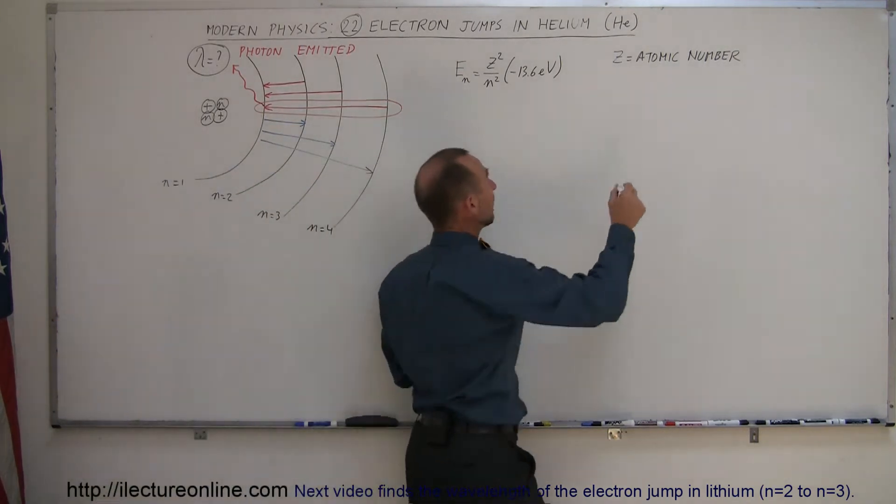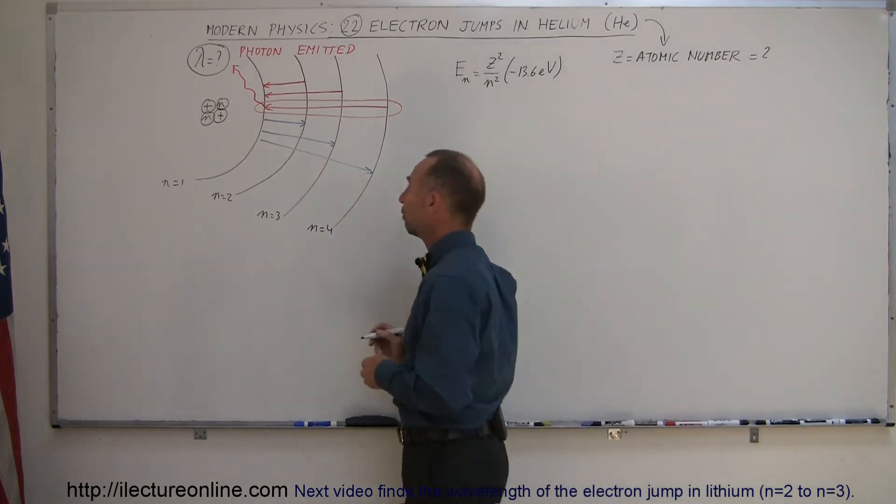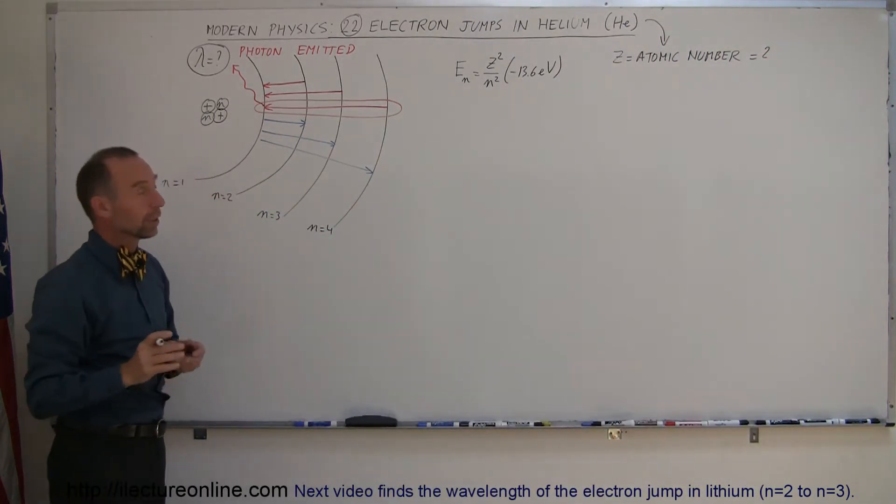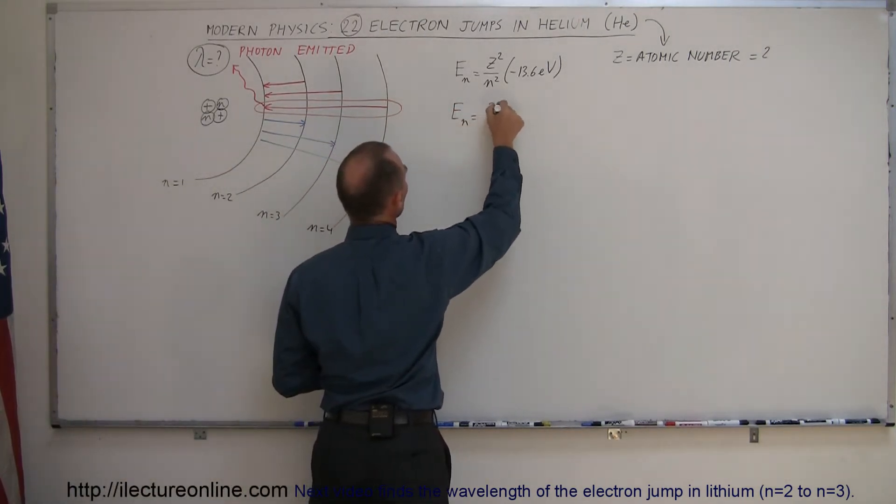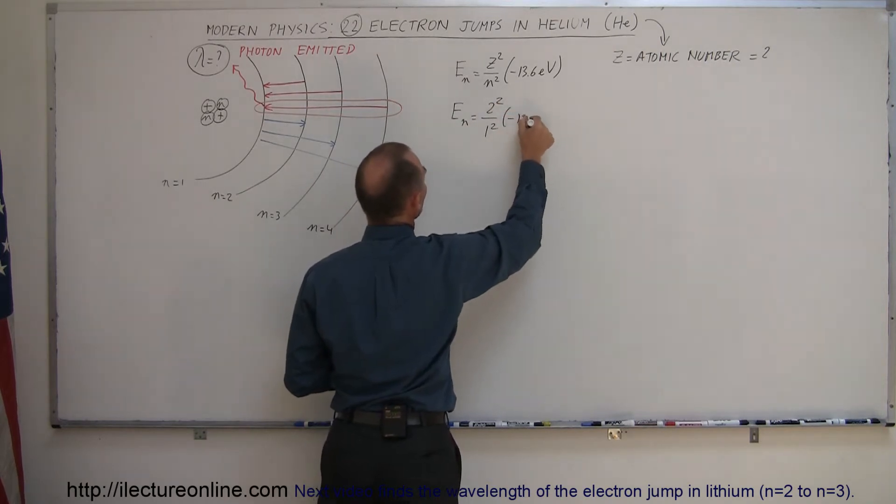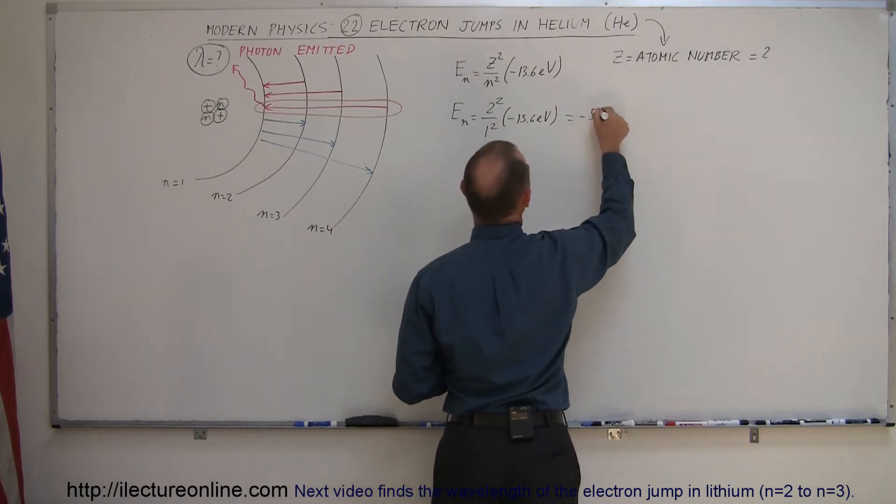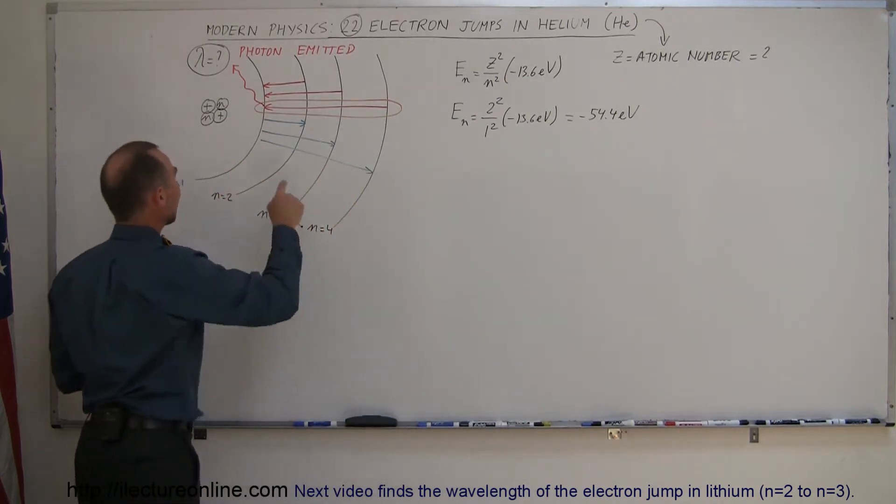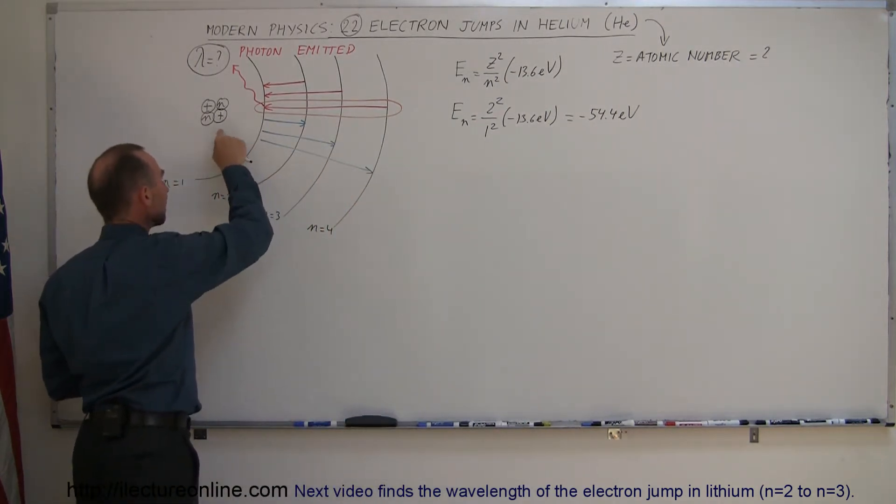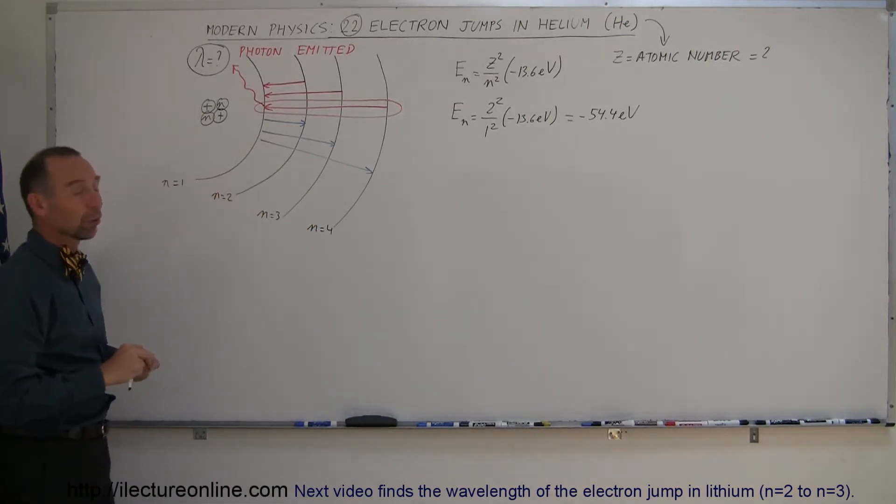So for helium, the atomic number is 2. So what is the energy of the first level for helium? Well, E sub n is equal to 2-squared divided by 1-squared times minus 13.6 electron volts. And so that would be minus 54.4 electron volts. So when an electron resides in the innermost orbit of a helium atom, and you want to completely set that electron free, you need 54.4 electron volts as opposed to only 13.6 electron volts for hydrogen.